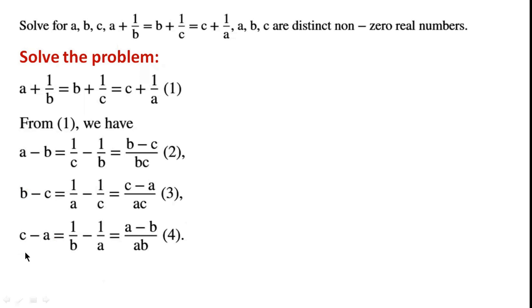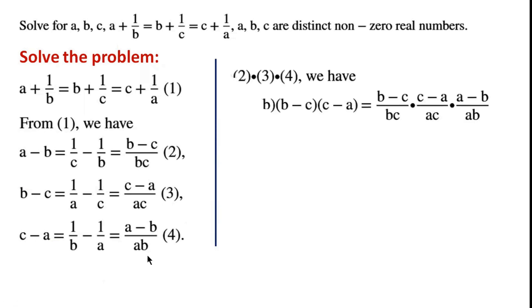we have C minus A equals 1 over B minus 1 over A equals A minus B over AB. Now we multiply equations 2, 3, and 4.